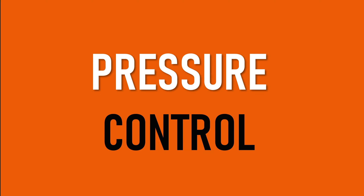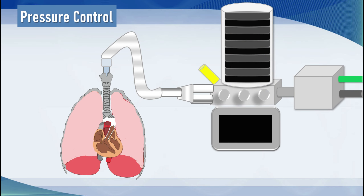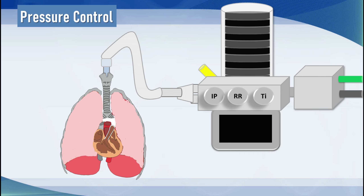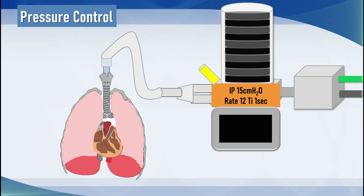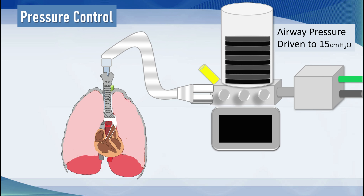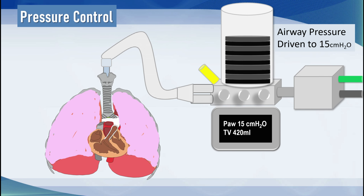Now let's move on to pressure control. In pressure control, we set an inspiratory pressure — that's our target pressure at end inspiration — which is the driving pressure above baseline, for example above PEEP or atmospheric pressure. We also set a respiratory rate and an inspiratory time so the ventilator knows when to cycle to exhalation. In this case I've set an inspiratory pressure of 15 centimetres of water, a rate of 12, and an inspiratory time of one second. The ventilator generates a flow of gas up to an airway pressure of 15 and holds that for one second, achieving an exhaled tidal volume of 420 mils.